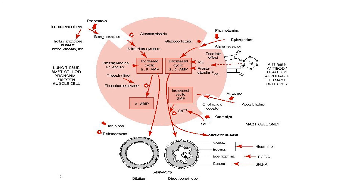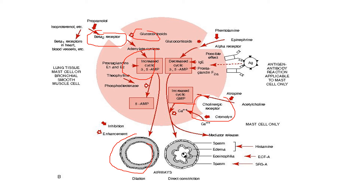Looking at how these are expressed: increasing cyclic AMP leads to airway dilation, while decreased cyclic AMP or increased cyclic GMP — facilitated by cholinergic receptors — leads to constriction. We can facilitate more cyclic AMP by stimulating beta-2 receptors, or by using glucocorticoids as anti-inflammatories, to cause airway dilation, decreased spasm, and reduced edema in the airways.